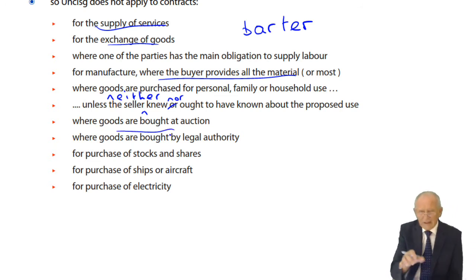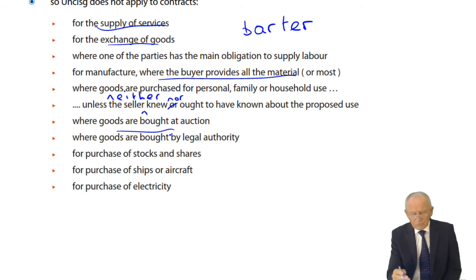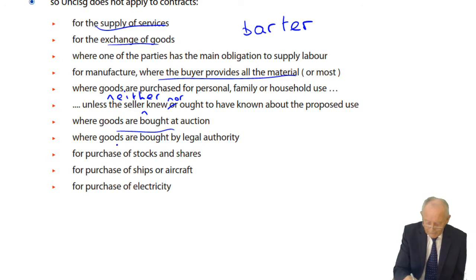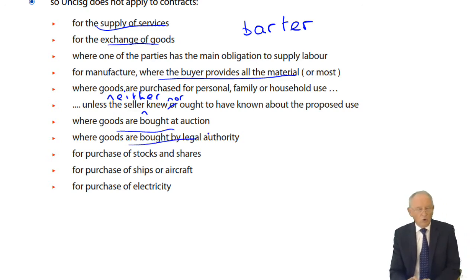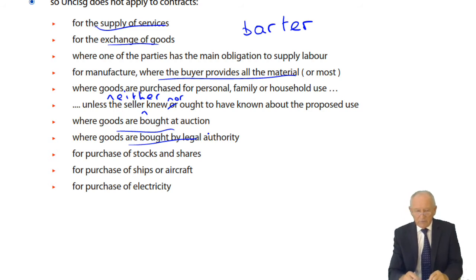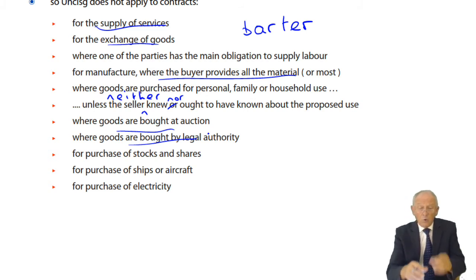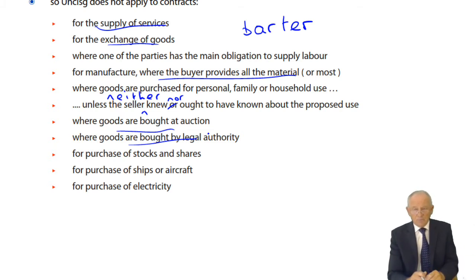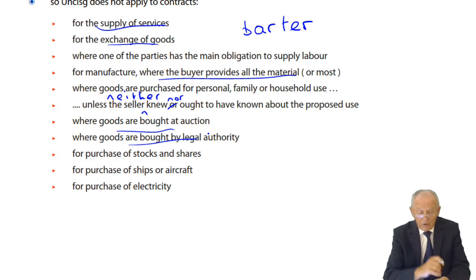Where goods are bought at auction, the convention does not apply — we'll return to auction sales shortly. Where goods are bought by legal authority — for instance, a state at war sequestering metal from a neighbouring business to construct tanks and weaponry — that is not a conventional contract. The state would presumably pay some compensation, but it's bought under legal authority, so the United Nations Convention does not apply.